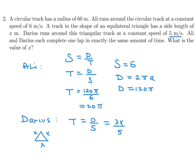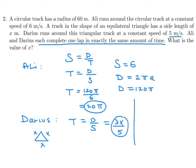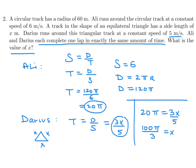They're saying the times are equal — each completes one lap in exactly the same amount of time. So we set them equal: 20 pi equals 3x over 5. That gives us 100 pi over 3 equals x, which is the value of x.